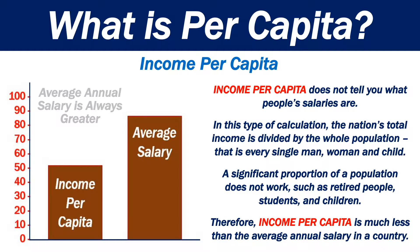A significant proportion of a population does not work, such as retired people, students and children. Therefore, income per capita is much less than the average annual salary in a country. The average annual salary is typically always greater than the income per capita.